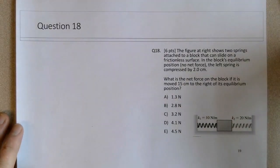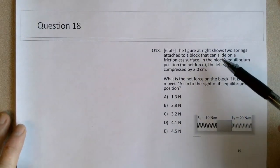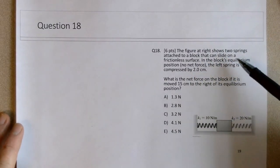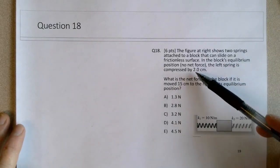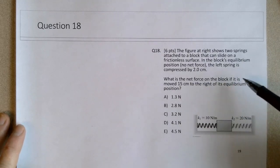Looking through the details here, the figure at right shows two springs attached to a block that can slide on a frictionless surface. In the block's equilibrium position where it has no net force, the left spring is compressed by 2 centimeters. What is the net force on the block if it has moved 15 centimeters to the right of its equilibrium position?